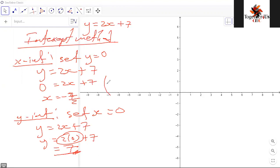What is the coordinate here? Remember, I set y to be 0, so the coordinate is negative 7 over 2 and a 0. Here, I set x to be 0, and then y happened to be 7.